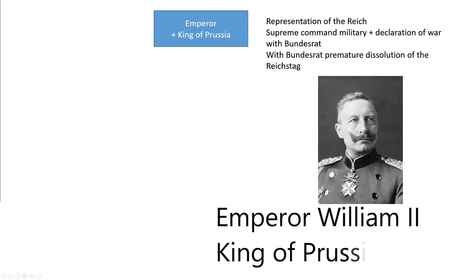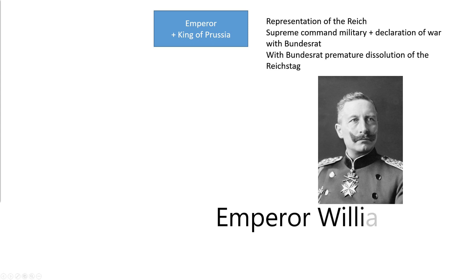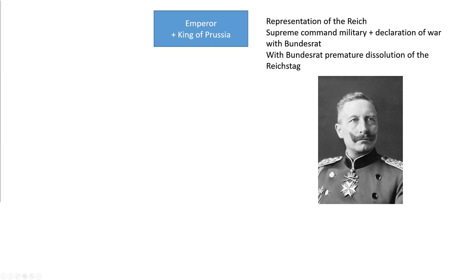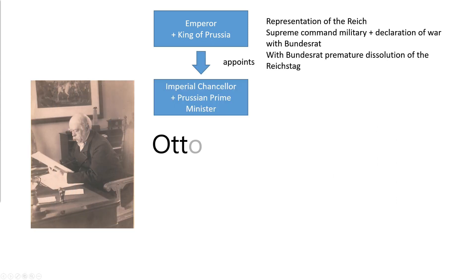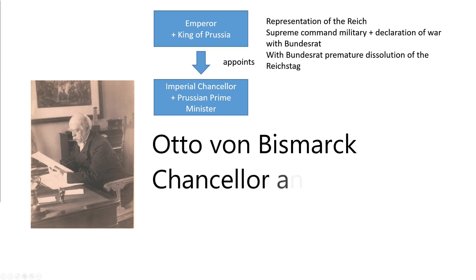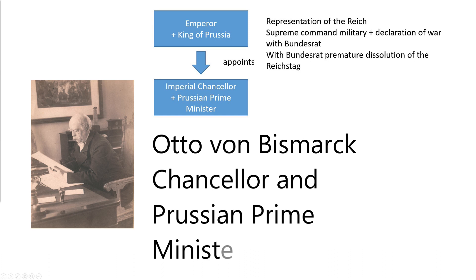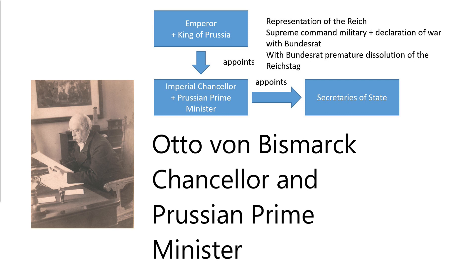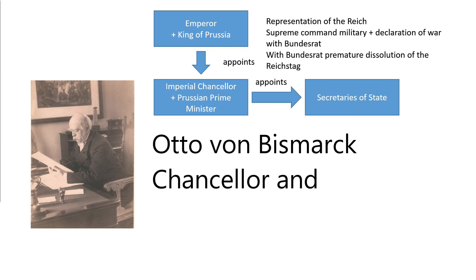The constitution granted far-reaching prerogatives to the emperor as the executive. The military, foreign policy and the imperial administration were largely removed from the influence of parliament. Above all, the appointment of the government depended solely on the confidence of the emperor, right up to the final phase of the First World War, and not on the majority in parliament. The emperor appointed the imperial chancellor, who was practically identical to the Prussian prime minister throughout. The imperial chancellor appointed state secretaries for the departments. There were no ministers at that time.